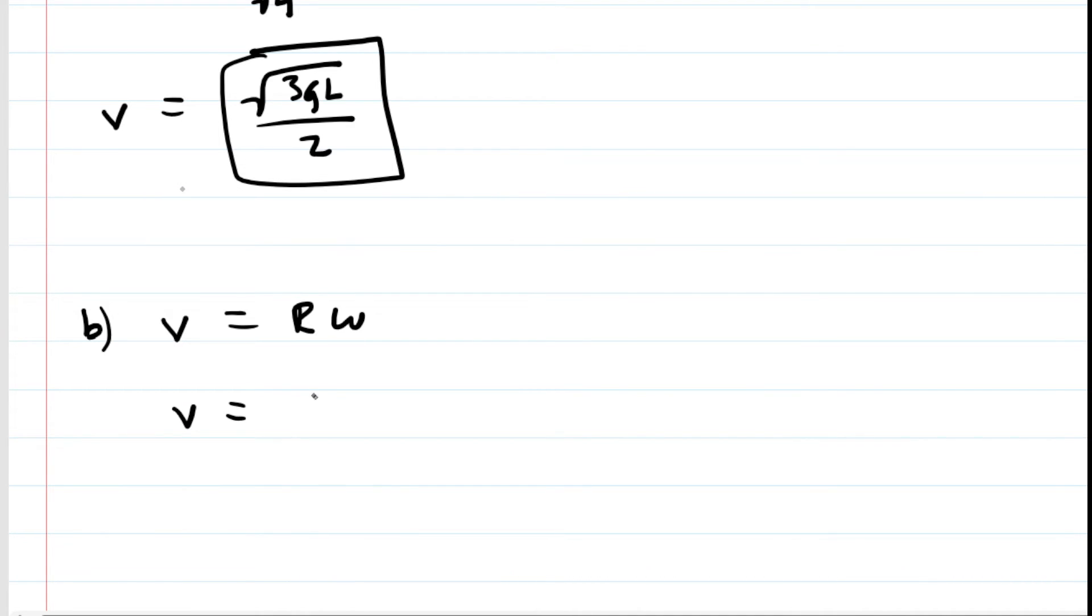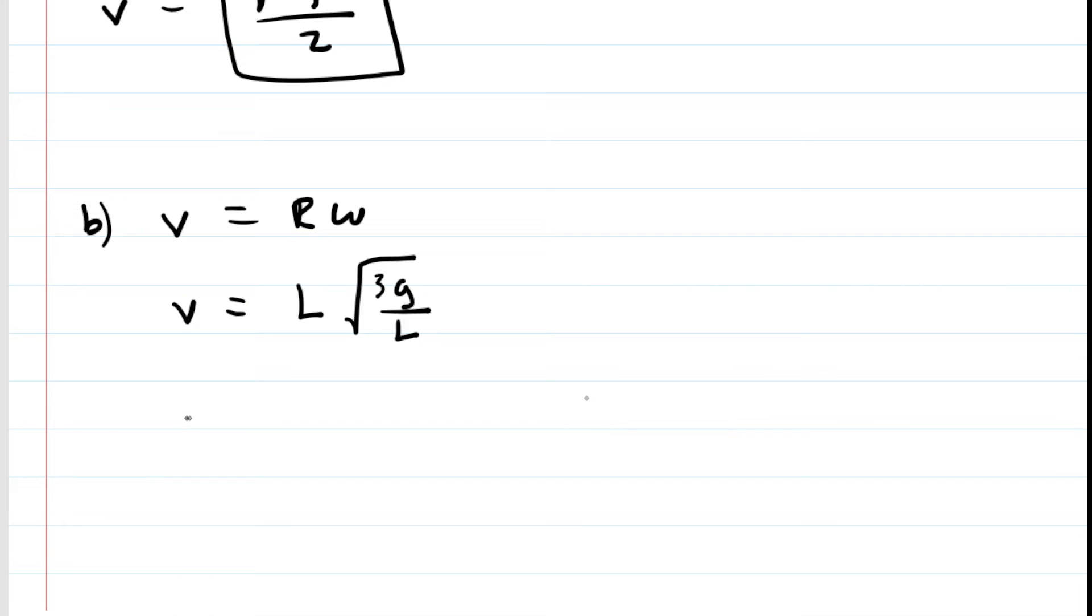But again, for R, we're going to now use L rather than L divided by 2. And then omega is the same as it was before. So we've made that substitution for omega. And now we'll do our little trick here to create two radicals, take the L, artificially square it, and then take the square root.